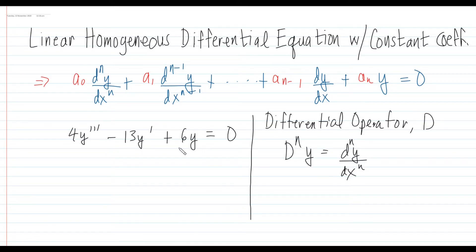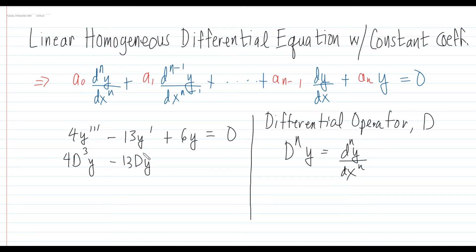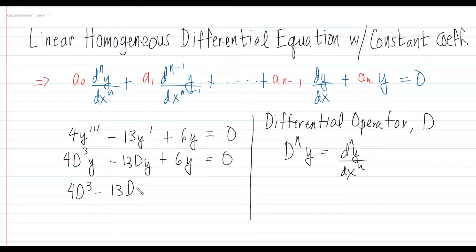So if we translate this to differential operator notation, it would be 4D cubed y minus 13Dy, because it is the first derivative so n equals 1, and then plus 6y. This particular differential equation can also be written as: 4D cubed minus 13D plus 6, quantity times y, is equal to 0.